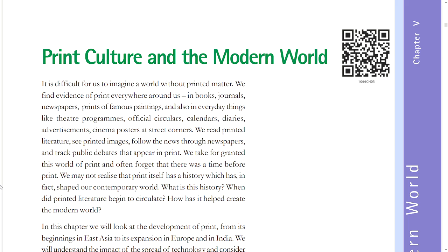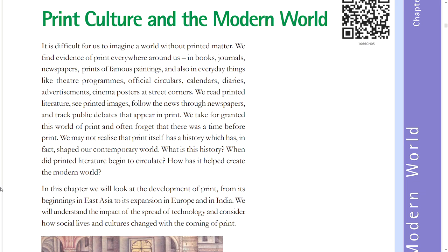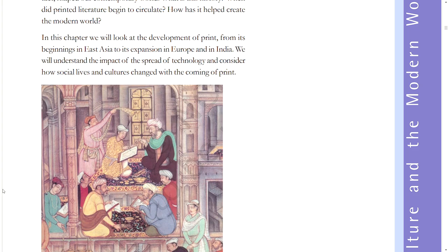We often forget that there was a time before print. We may not realize that print itself has a history which has in fact shaped our contemporary world. When did printed literature begin to circulate? How has it helped create the modern world? In this chapter, we will look at the development of print from its beginning in East Asia to its expansion in Europe and in India. We will understand the impact of the spread of technology and consider how social lives and cultures changed with the coming of print.